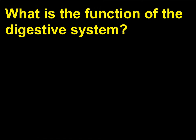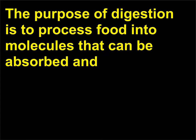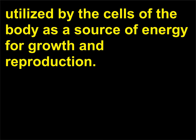What is the function of the digestive system? The purpose of digestion is to process food into molecules that can be absorbed and utilized by the cells of the body as a source of energy for growth and reproduction.